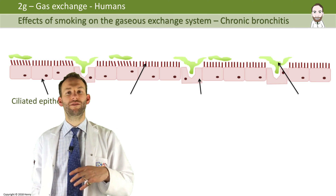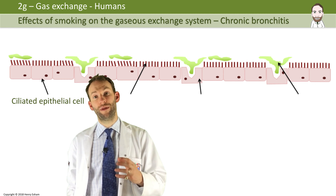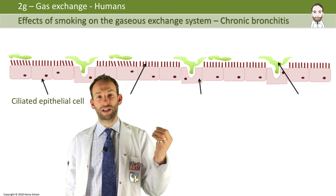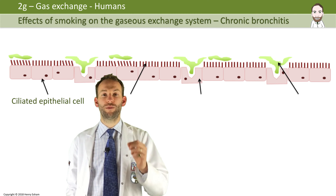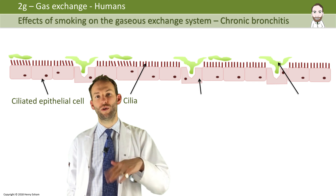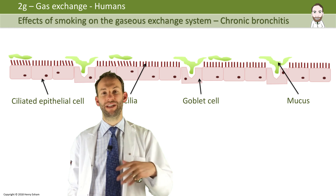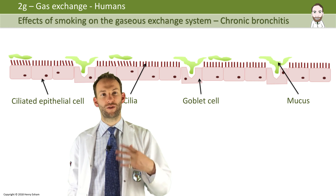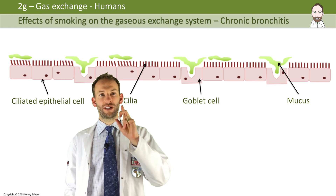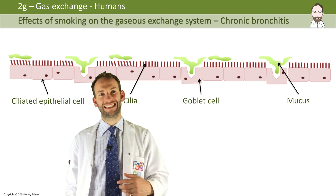To understand chronic bronchitis, you need to know how the lungs function normally first. In a healthy lung, the bronchi and bronchioles are lined with tiny microscopic hairs called cilia. These cilia are constantly wafting mucus. Goblet cells secrete mucus which traps dust, dirt, and bacteria, and then the cilia waft the mucus up into your mouth so you can swallow it into your stomach where the bacteria are killed by acid.